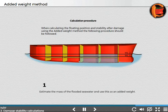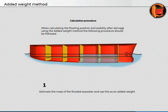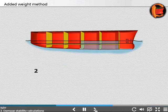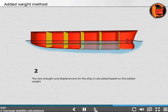Step 1: Estimate the mass of the flooded water and use this as an added weight. Step 2: Draft and displacement for the ship is calculated based on this added weight.